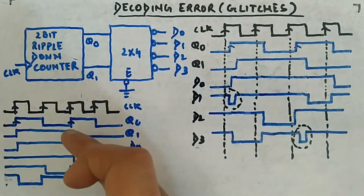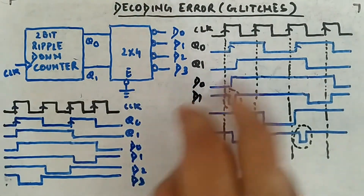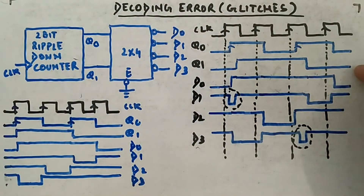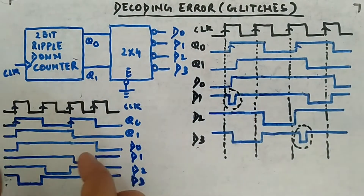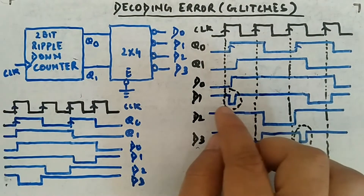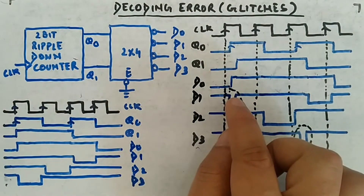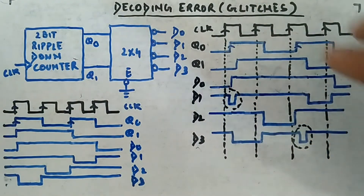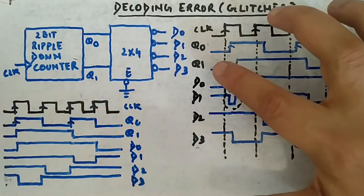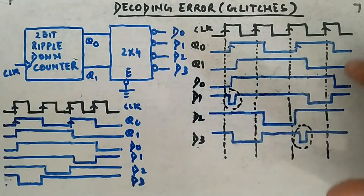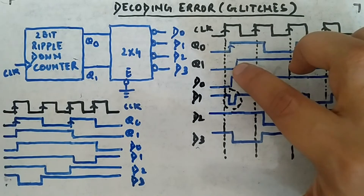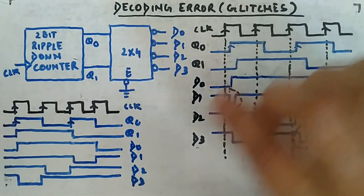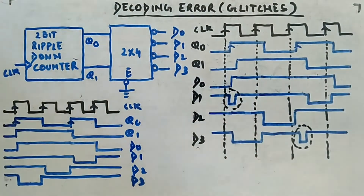The waveform looks similar but the timing is different. When you feed these delayed Q0 and Q1 into the decoder, the output signals are shifted versions of the ideal. But you can see a small glitch on D1 — because momentarily Q1 is 0 and Q0 is 1, giving 01, so D1 gets activated for a very short duration.